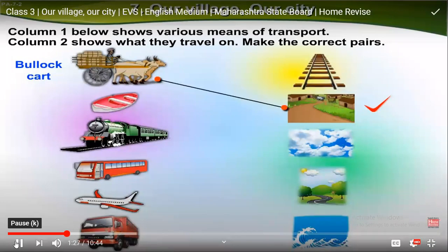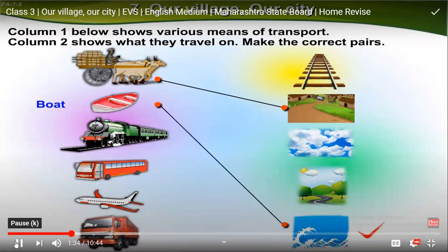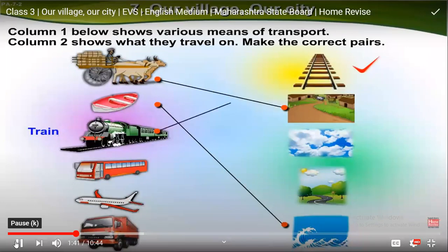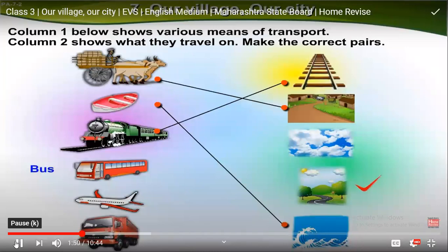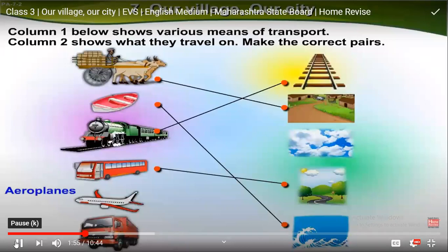Boat — boat sails in water, let us make the pair. Train — railway train, the pair is already made. Bus — bus moves on a pakka road, let us make the pair. Aeroplane — aeroplane flies in the air, so we can make the pair.